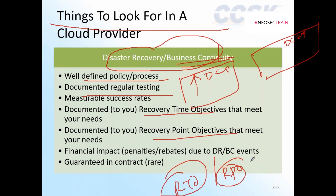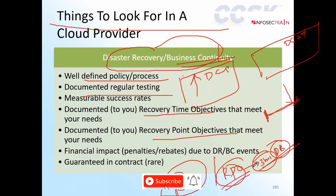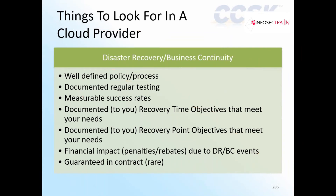For example, if the RTO is three hours for a database, that means the database backup is taken every three hours. Let's say I took a backup now and then the database crashed — I can suffer data loss from the last three hours. RPO is how much data I can afford to lose. Lesser RPO means more cost.